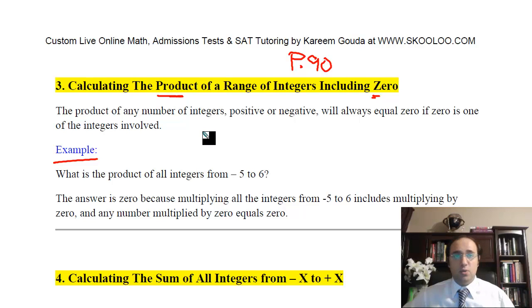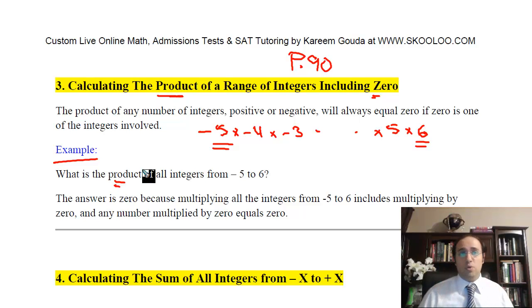So basically what I'm saying is what is negative 5 times negative 4 times negative 3 all the way times 5 times 6. So all of the integers from negative 5 all the way to positive 6 multiplied by each other, the product. Now what someone would sometimes do on the test, I've had students think that way, is that they would actually try to multiply all these numbers together. So negative 5 times negative 4 is positive 20,